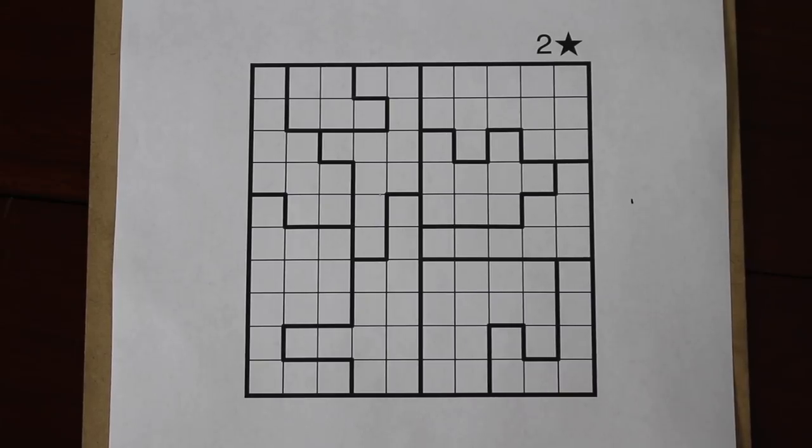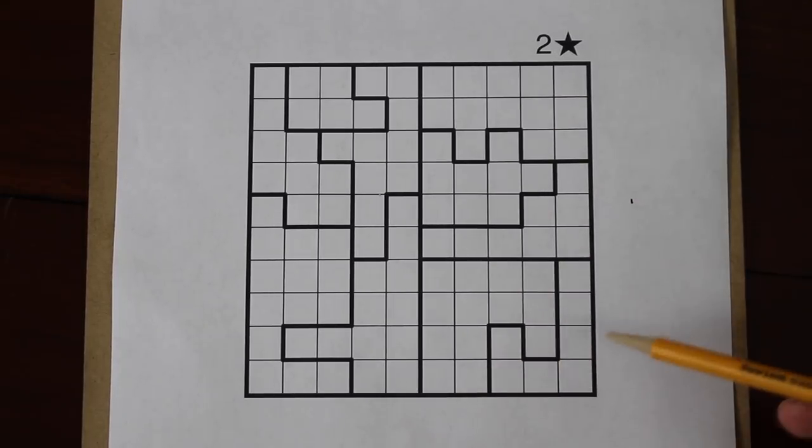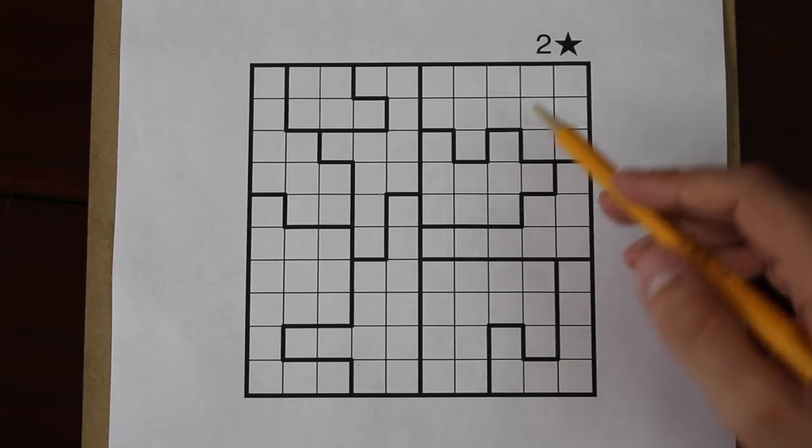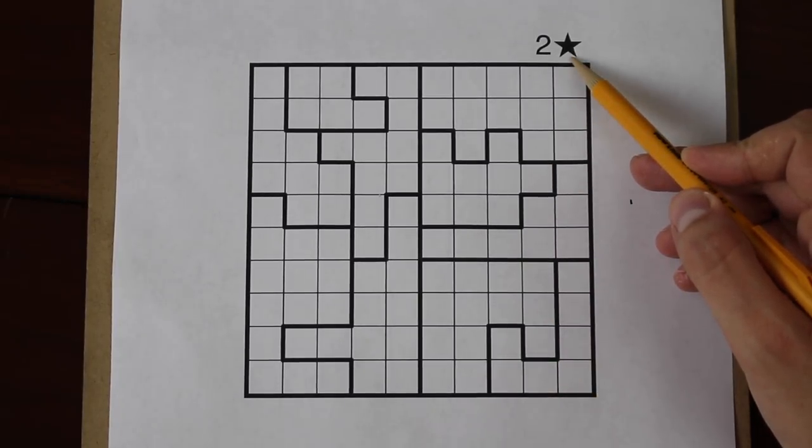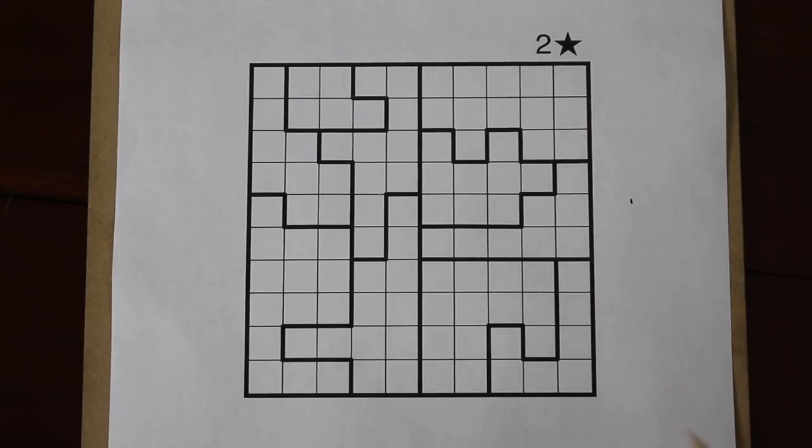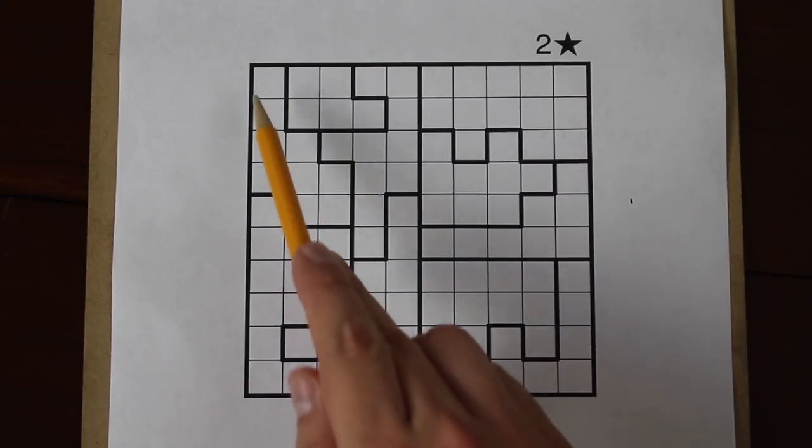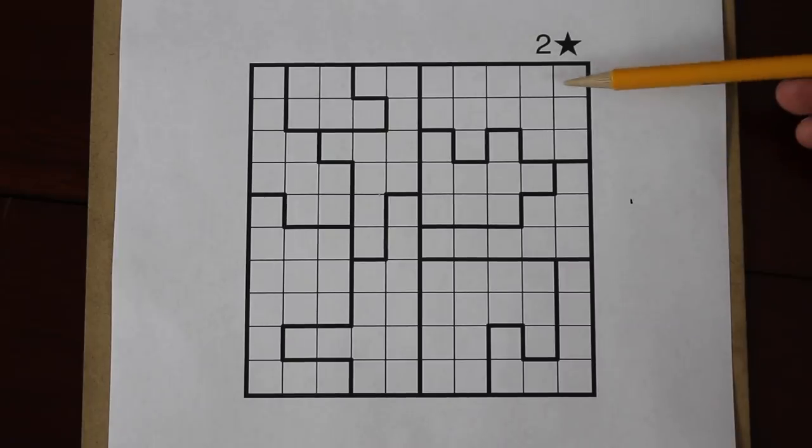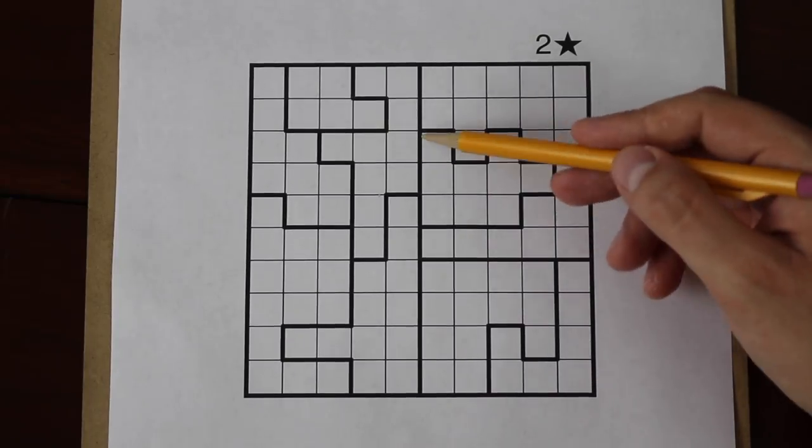Before we begin, let's review the rules of the star battle puzzle. The star battle puzzle involves placing stars into a grid, like this. The number of stars you have to place varies from puzzle to puzzle, but it's listed here in the upper right hand corner. In this puzzle, it's two stars. What that means is that you have to place exactly two stars in every row, every column, and every bolded region.